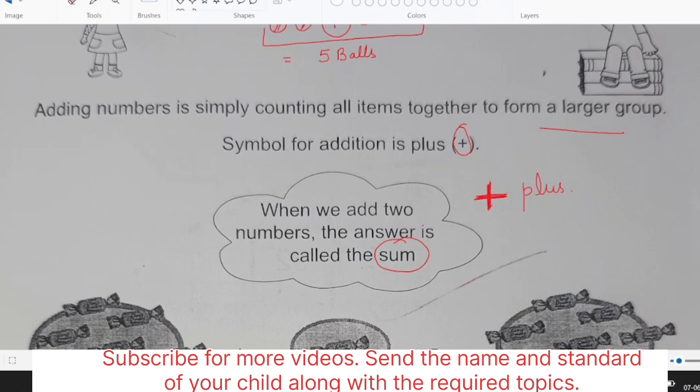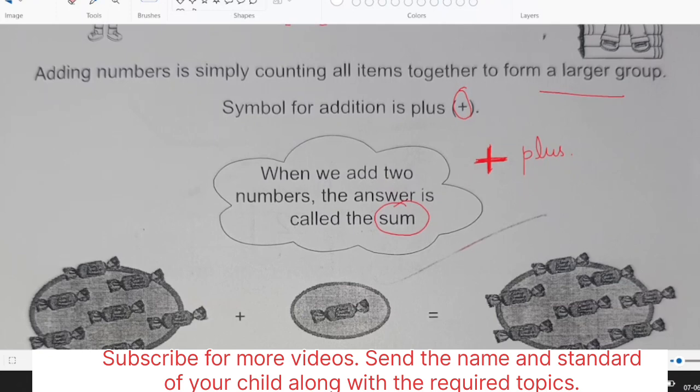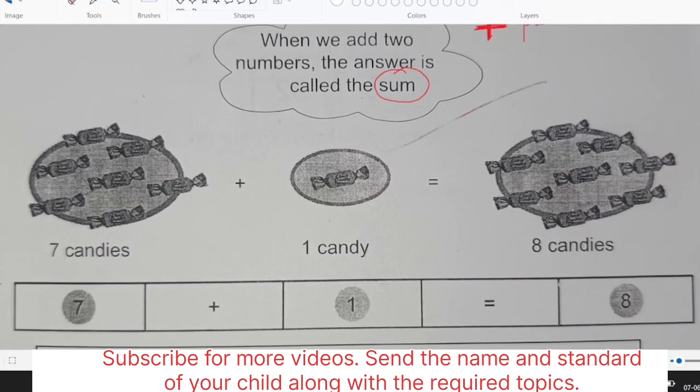When we add two numbers the answer is called the sum. So the sum means when we add the two numbers, two numbers or more numbers.